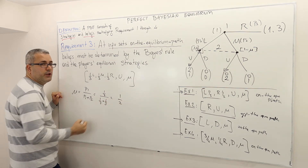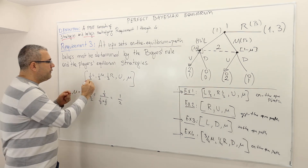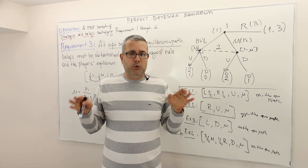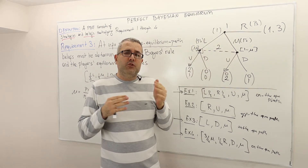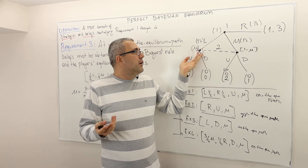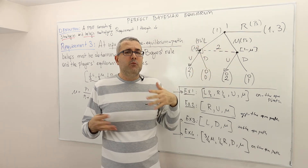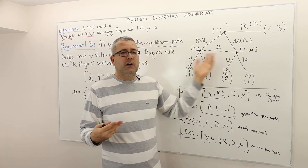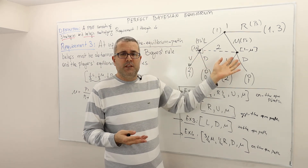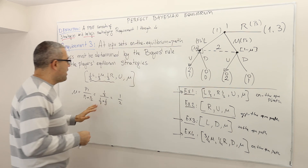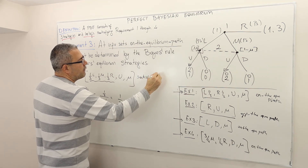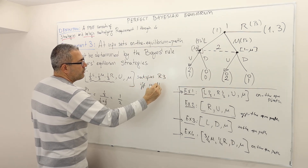So mu equals one-over-two, which makes sense. If you believe your opponent plays left, M, and R with equal probabilities, and you're at this information set, the likelihood of being at either decision node should be the same — because he plays left or M with equal probabilities and there are two decision nodes. So this strategy profile satisfies requirement three if and only if mu equals one-half.